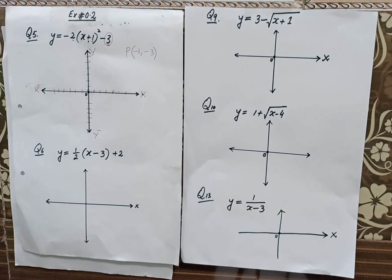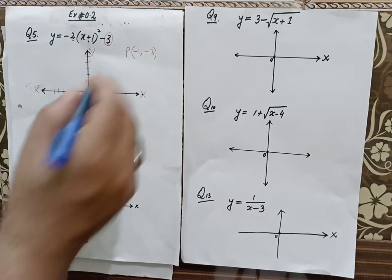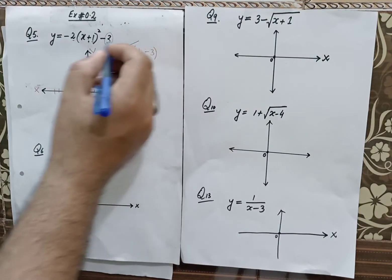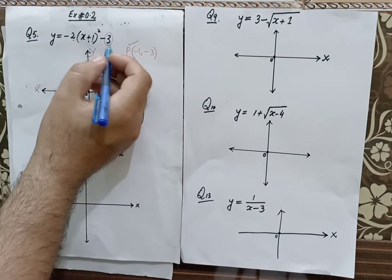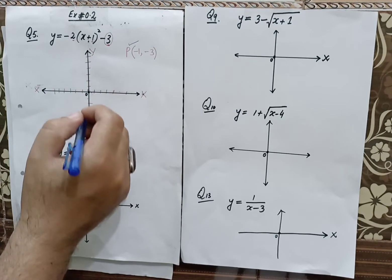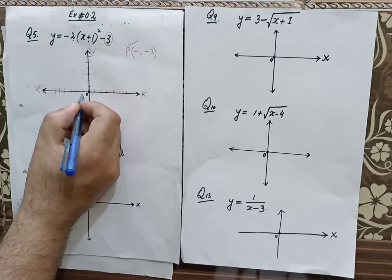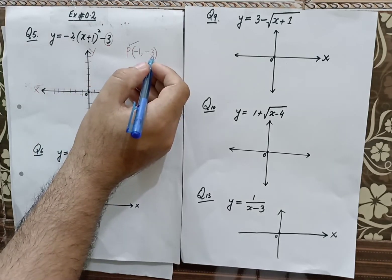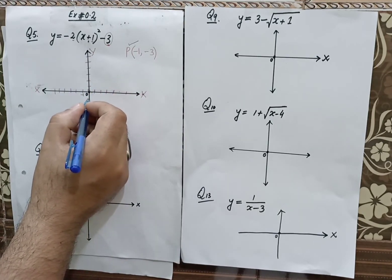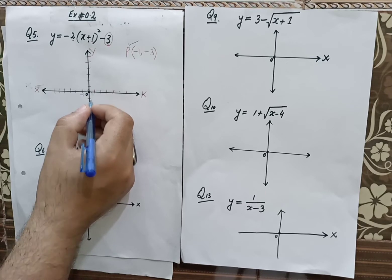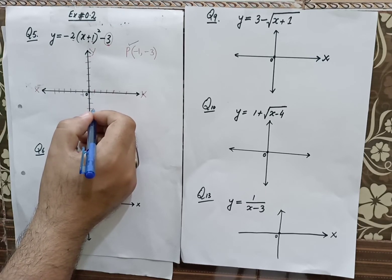We have defined the scaling. Now we locate the vertex for this algebraic function. For minus one, we go to minus one on the x-axis. For minus three, we go below the x-axis three units: minus one, minus two, minus three here.